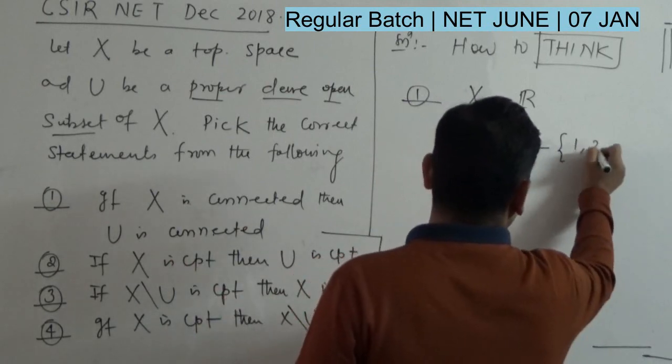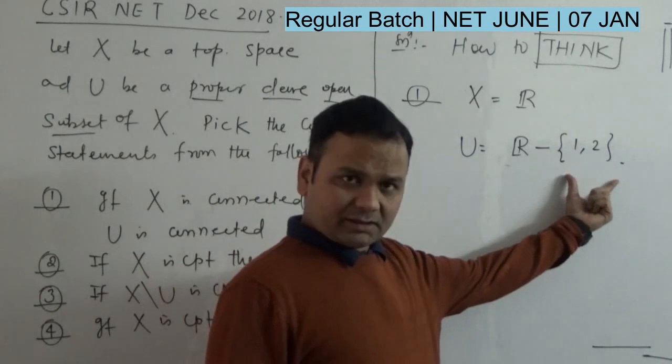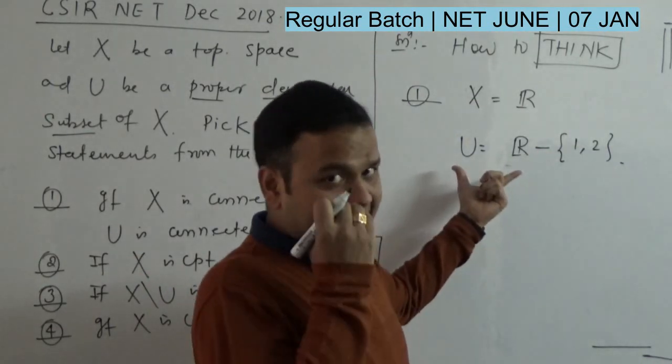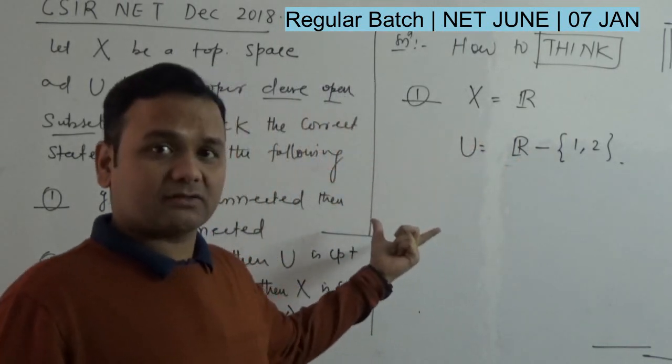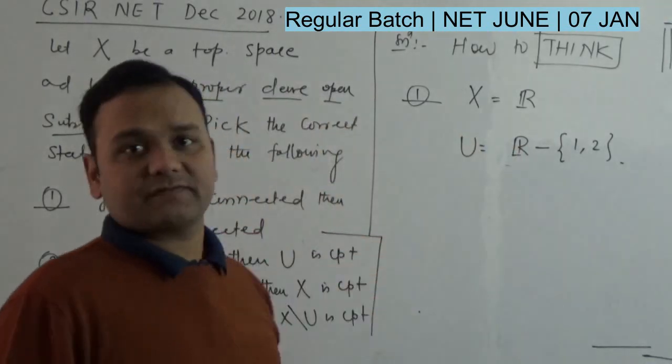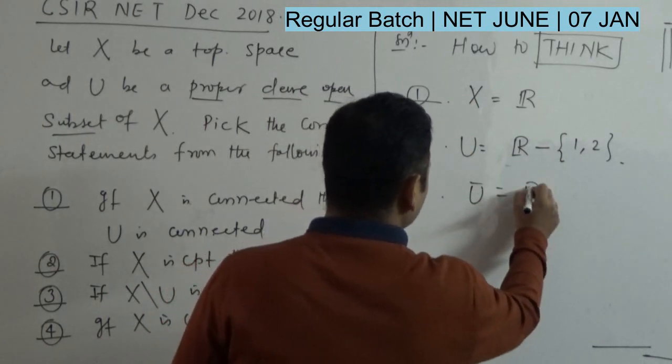Take X to be R with respect to the usual metric, and U is R minus {1,2}. So this is a closed set; the complement of a closed set is open, and this is dense because it contains all the limit points of R, and this is open. So U is open, proper, everything is satisfied. It is a pure exercise to prove that U closure is equal to R.